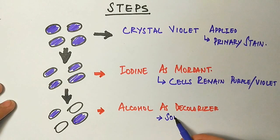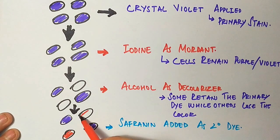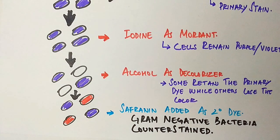In the last step, safranin, that is the secondary dye, is added to the bacterial cells which will counter-stain the gram-negative bacteria because they have lost the color while adding alcohol to them. So this safranin will dye the gram-negative bacteria while the gram-positive bacteria will retain the primary dye here.